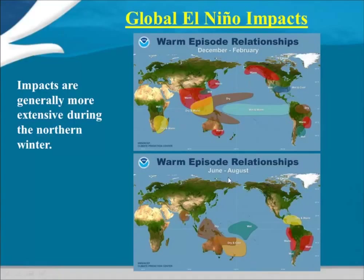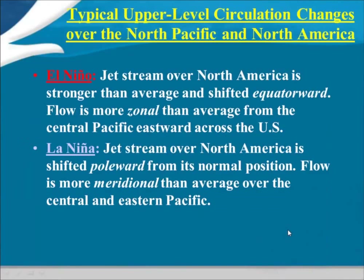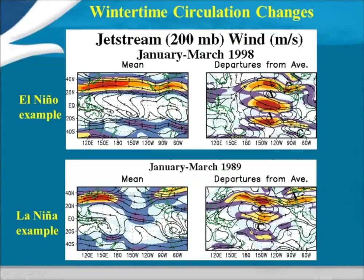The impacts tend to be more extensive across the globe during the northern hemisphere winter, because El Niño and La Niña tend to achieve their maximum amplitude during that period. During the northern hemisphere summer or southern hemisphere winter, the impacts tend to be more restrictive to the southern hemisphere. This is true for both El Niño and La Niña impacts.